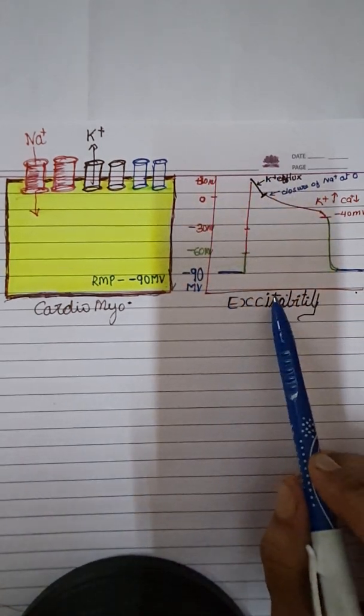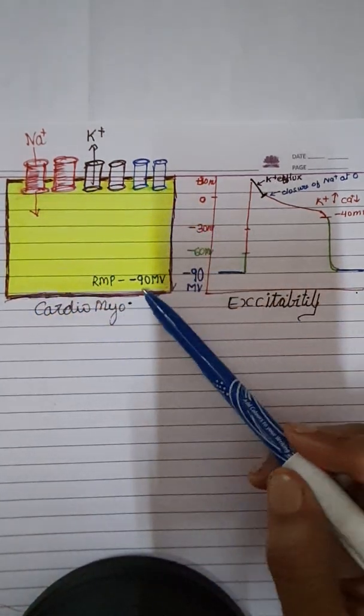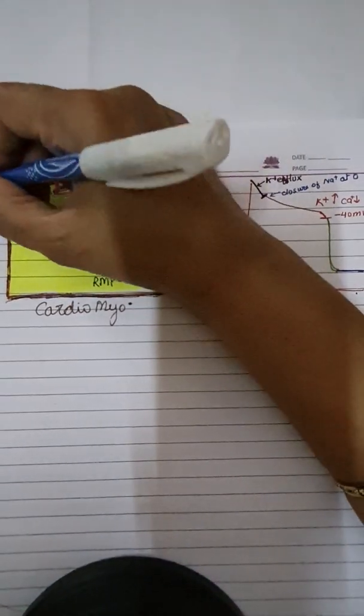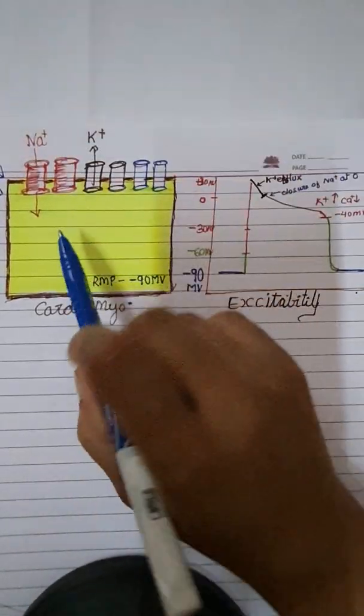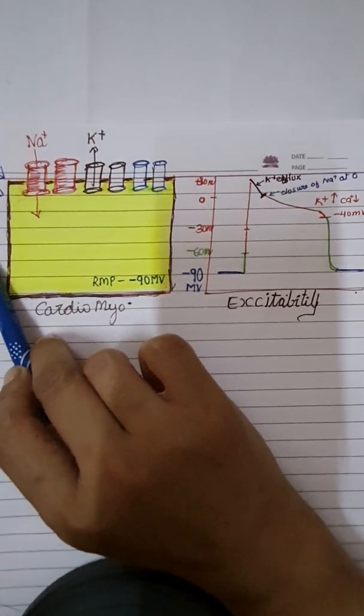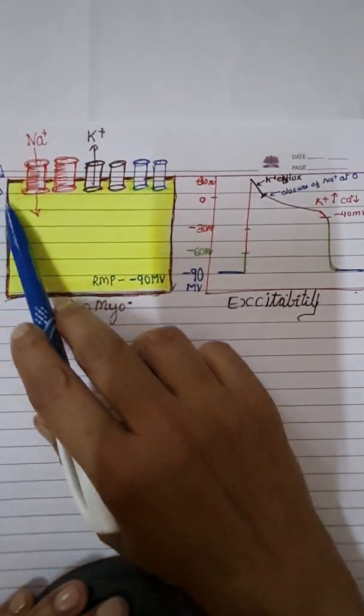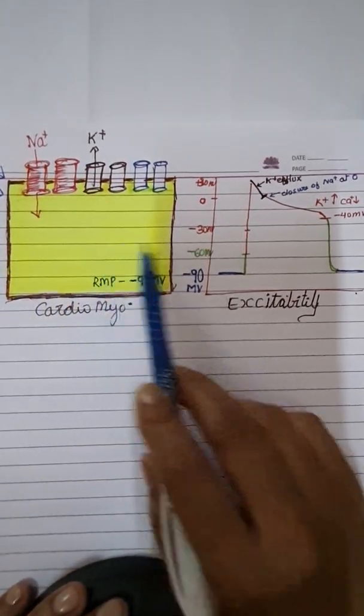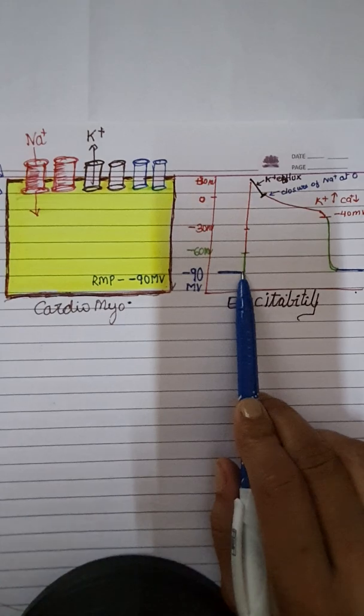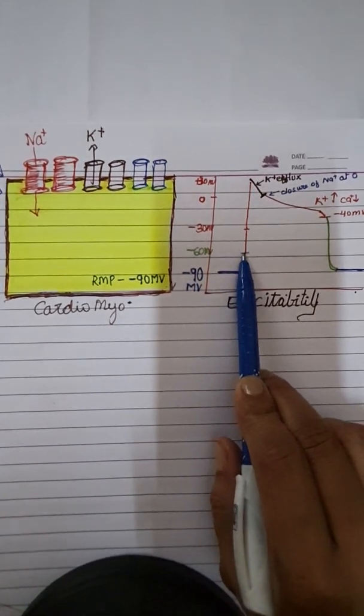First, the resting membrane potential of cardiomyocyte is minus 90 millivolts. When an appropriate stimulus comes, it causes influx of some cations from the ECF. Now this entry of cations within the cell causes loss of negativity from minus 90 millivolts to minus 60 millivolts.